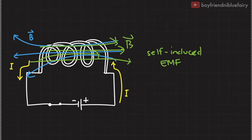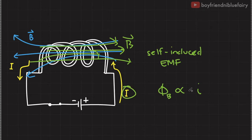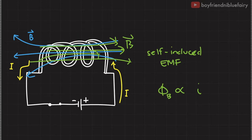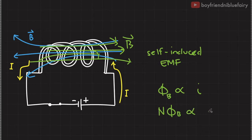Similarly, if we consider a single loop in the inductor, the flux experienced by this loop due to the current is directly proportional to that current — represented here with small i. We use small i to represent current that is changing over time. But if we consider all loops in this inductor, their effects are additive. Hence, if we have N number of loops, we multiply the flux phi sub b by N to get their sum, and this total flux N·phi_b is directly proportional to the current i.